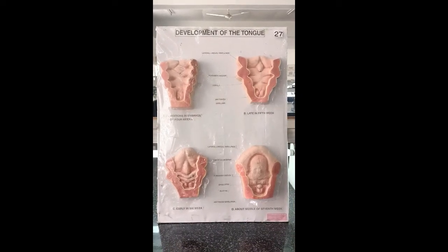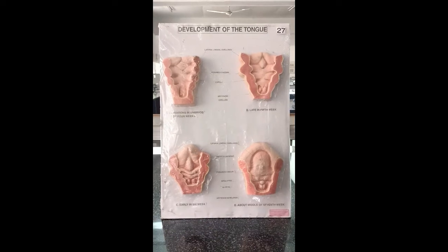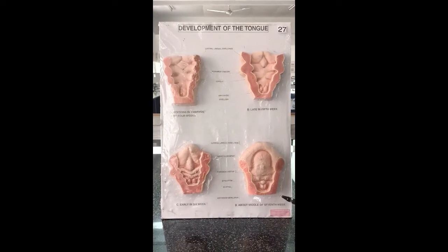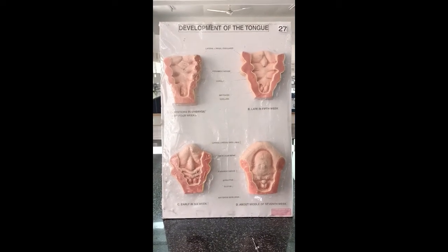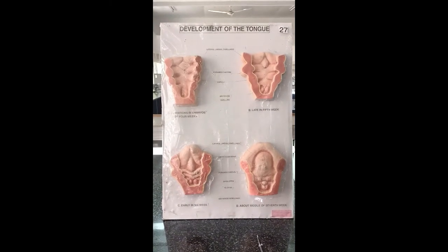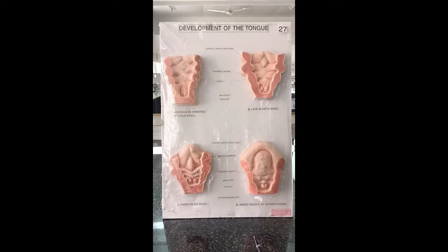The part of the tongue developed from the second pharyngeal arch is buried underneath the part developed from the third pharyngeal arch. The muscles of the tongue are developed from the occipital somites.